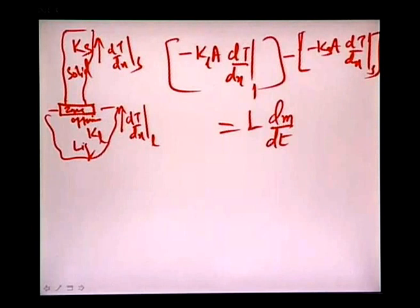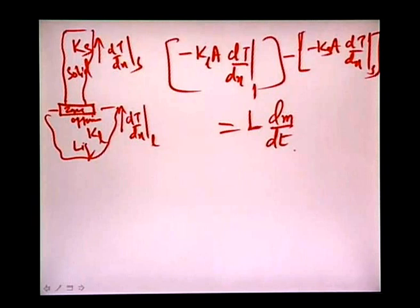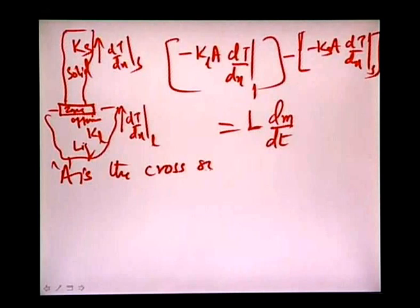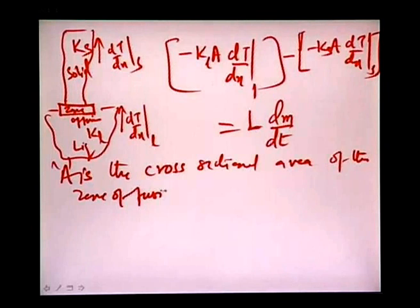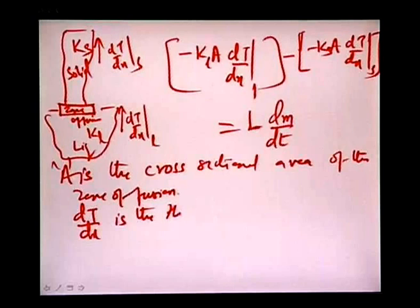The heat balance gives: L·(dm/dT) = −K_l·A·(dT/dx)_liquid − K_s·A·(dT/dx)_solid. Here A is the cross-sectional area of the zone of fusion and dT/dx is the thermal gradient in the normal direction. Substituting dm = ρ_s·A·dx, we get L·ρ·A·(dx/dT), where dx/dT is the pull rate — the velocity of solid silicon formation.